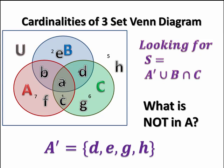Well, we need to think what is not in A. A is the set in red, which includes the regions a, b, c, and f. A complement is everything else. So A complement includes regions d, e, g, and h.